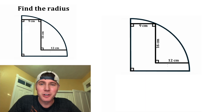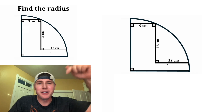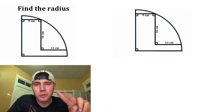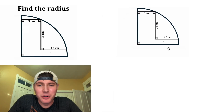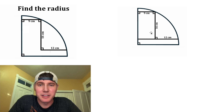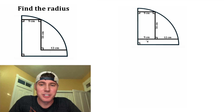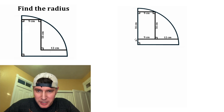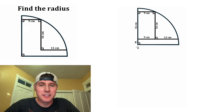If you want to try it on your own, pause it right now, because I'm going to solve it. For the first step, let's extend this over here, and we're completing this rectangle. This bottom will be equal to the top, which is 9, and this side will be equal to this side, which is 16. And we've created this little piece right here — let's call that X.